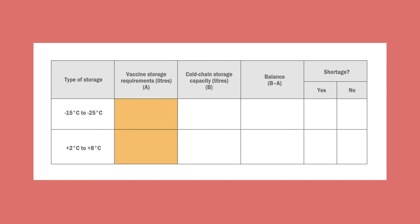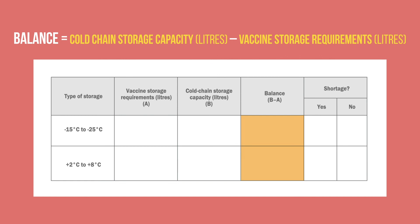When you know your vaccine storage requirements and cold chain storage capacity, you can determine if you have sufficient cold chain storage capacity to store the vaccines. List your vaccine storage requirements and cold chain storage capacity for both temperature ranges. For each type of storage, subtract the required vaccine storage from your available cold chain capacity. If the result is a negative number, you have a shortage issue that will need to be addressed. For example, if you had 528 liters of refrigerator and cold room space available but need 600 liters for an incoming vaccine shipment, subtracting 600 from 528 gives a negative number, meaning you will need to find additional cold chain storage space to safely store all your vaccines.